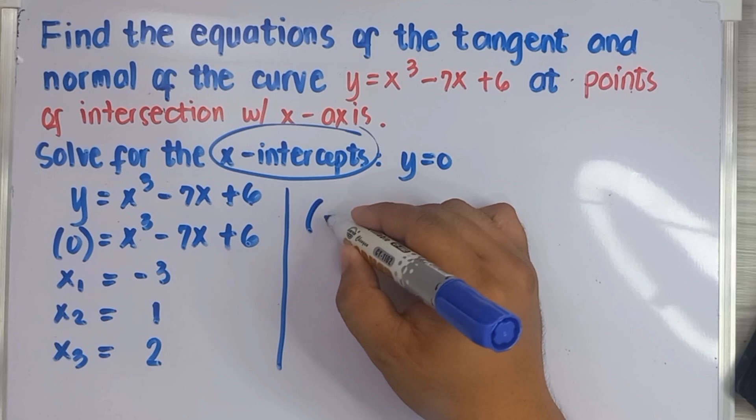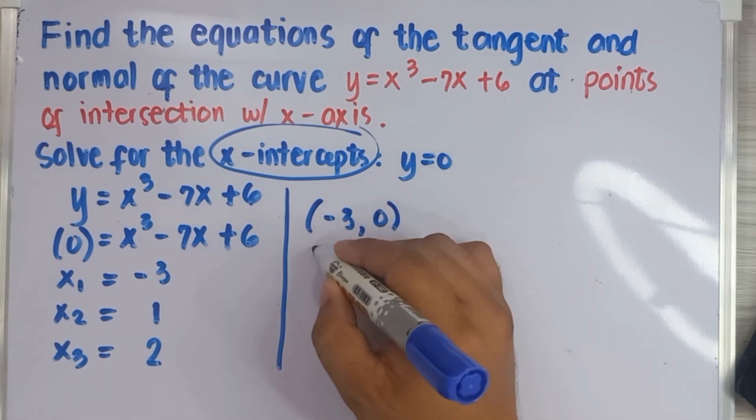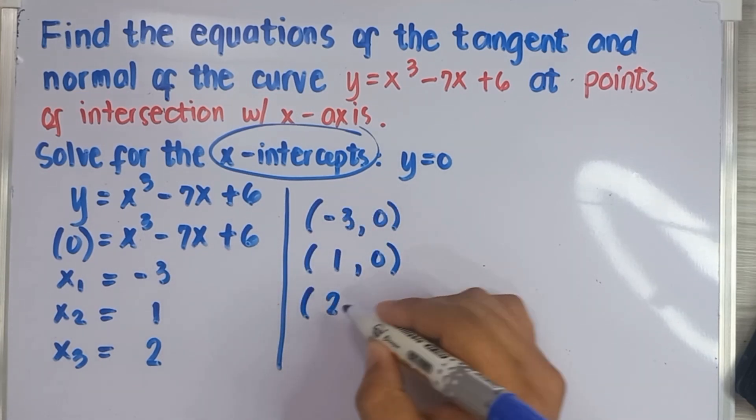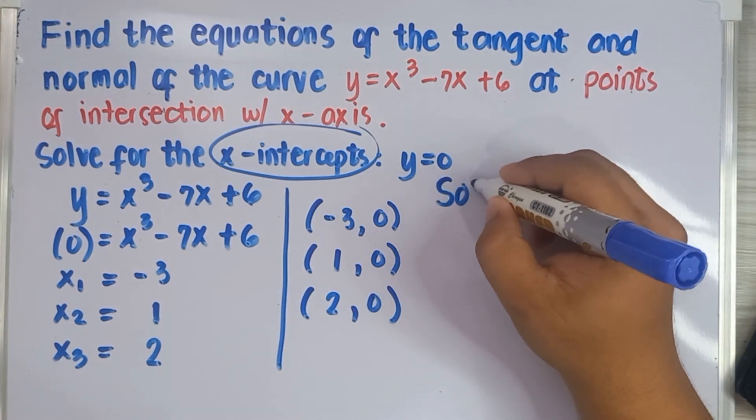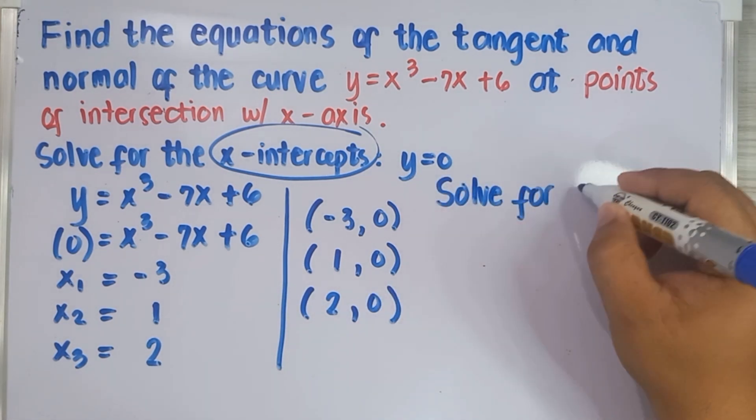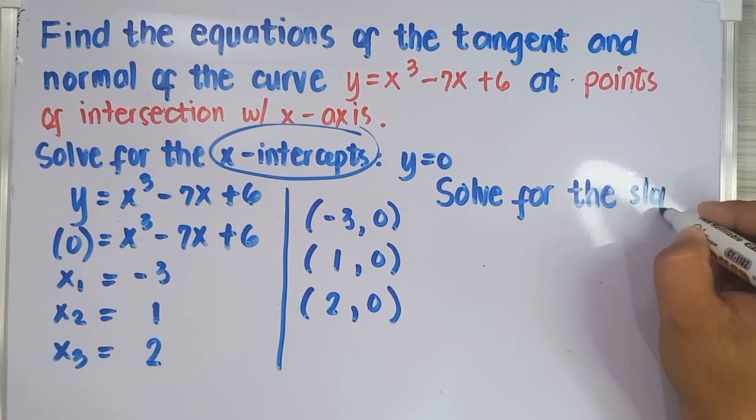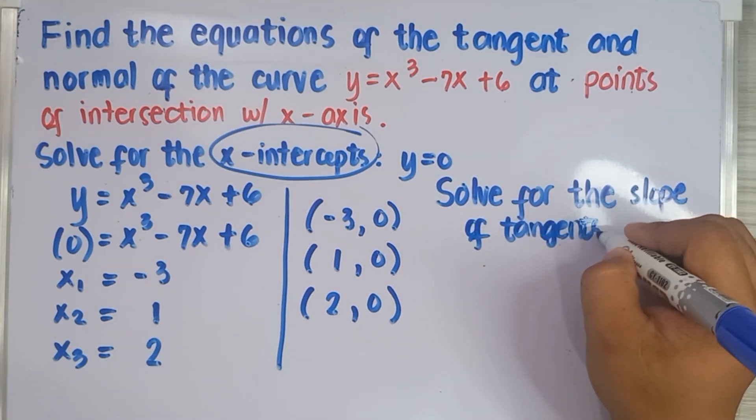And here are the points of intersection: (-3, 0), (1, 0), and (2, 0). Next, solve for the slope of the tangent lines at each point of intersection. Try using your calculators at home, see if you can get the same slopes.